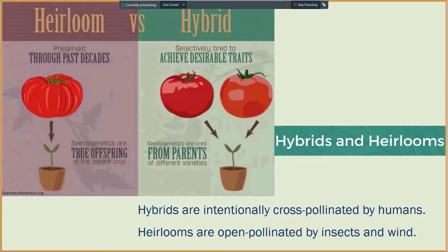Hybrid plants are created when breeders intentionally cross-pollinate varieties, attempting to produce an offspring that contains the best traits of those parents. During hybridization, pollen is carefully handled to make sure that the right plants are crossed. Hybrids are created for characteristics such as increased size, better disease resistance, varying acidity level, as well as many others. Hybrid seeds harvested and saved will not have the same traits as the seeds you planted, due to those plants being pollinated during the growing season.